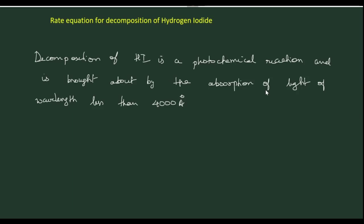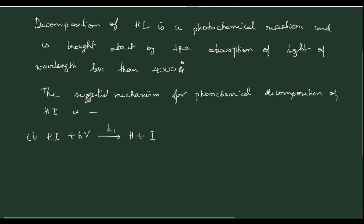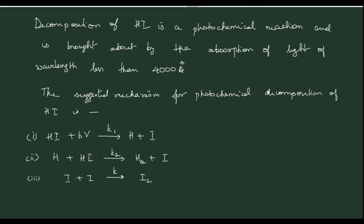The suggested mechanism of photochemical decomposition of HI is as follows. The first step is dissociation of HI by absorption of light to give H plus I, with rate constant K1. The second step is the H formed in the first step reacts with HI to form H2 and I, with rate constant K2. The third reaction is combination of I plus I giving I2, with rate constant K3.